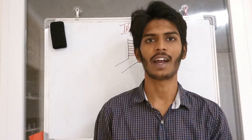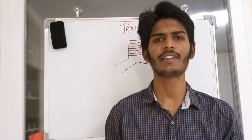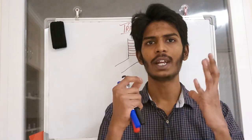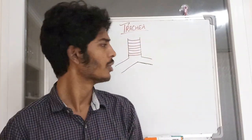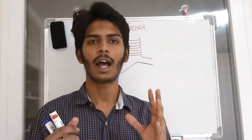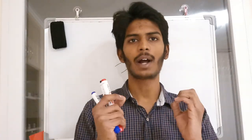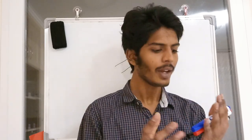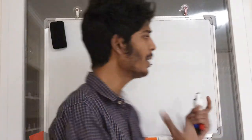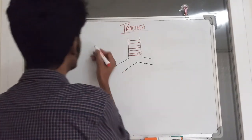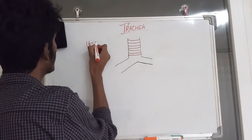Today we'll discuss the anatomy of the trachea. The trachea, also called the windpipe, is involved in conducting air to the lungs. It is a very important organ of our body. The trachea is made up of C-shaped cartilages — there are 16 to 20 C-shaped cartilages in total.